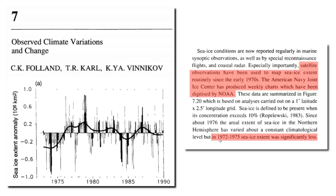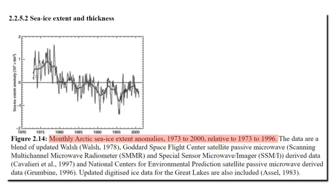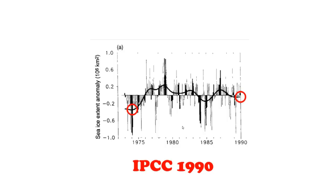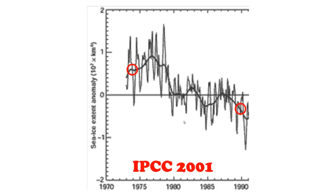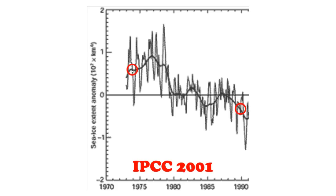In the 1990 report, they showed the years 1972 to 1975 as being the lowest on record. They showed a similar story in the 1995 report. But six years later, the United Nations altered the data to make those years among the highest on record. This is the graph from the 1990 report and this is the same graph from the 2001 report shown at exactly the same scale. In the 1990 report, sea ice extent was increasing. But in the 2001 report, they changed the increasing trend into a sharply decreasing trend.